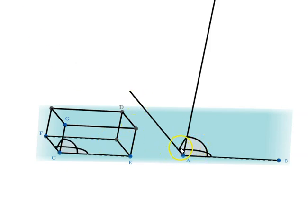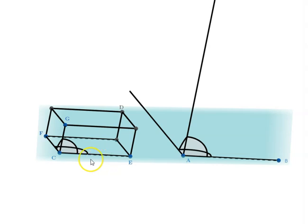Now we have constructed this solid angle on A. We are given AB, and in the original solid we have CE and CG. On this line we have to cut off a segment such that CE is to CG equals AB is to that segment. So AK is the segment that has to be cut off from this straight line.